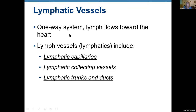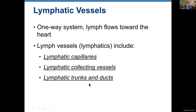Lymphatic vessels form a one-way system where lymph flows towards the heart. Lymphatic vessels include lymphatic capillaries, lymphatic collecting vessels, lymphatic trunks, and lymphatic ducts. Ducts are the biggest in diameter, then trunks are smaller, then collecting vessels, then capillaries — the smallest.